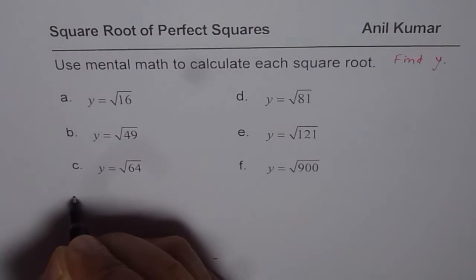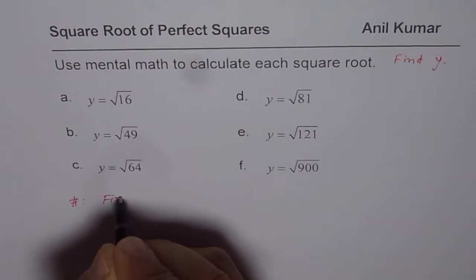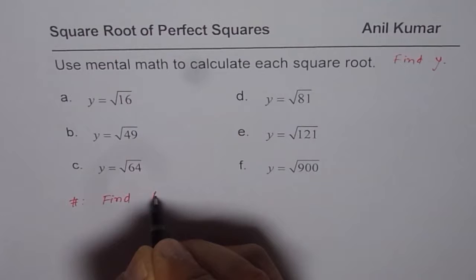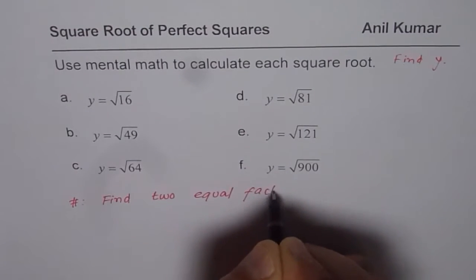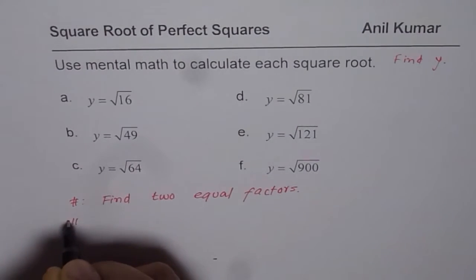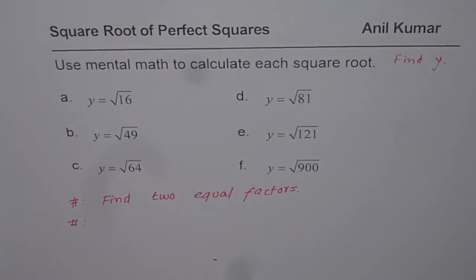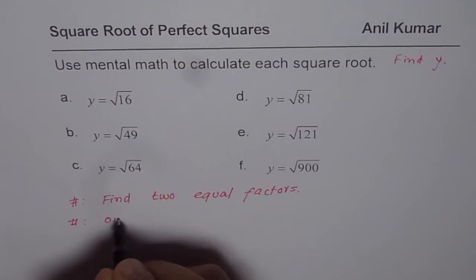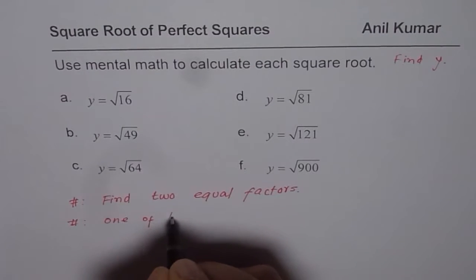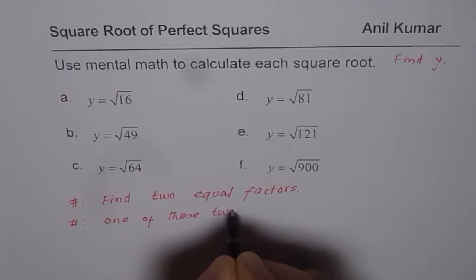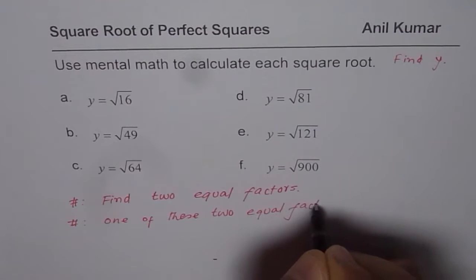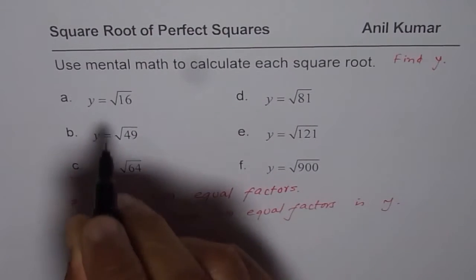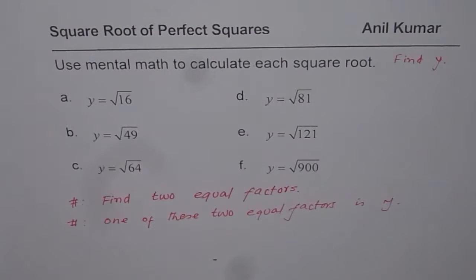So step one is find two equal factors. And step two is write down the answer and that should be one of these two equal factors is y, the square root of the number itself. So that is the strategy for us.